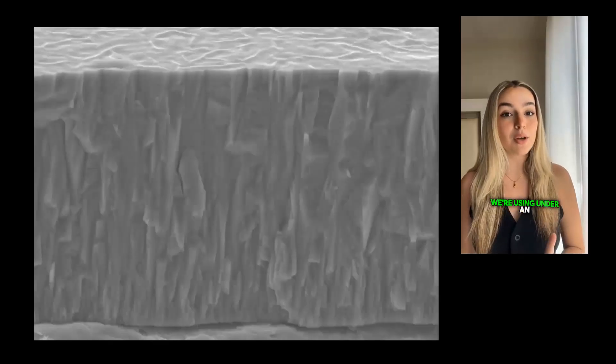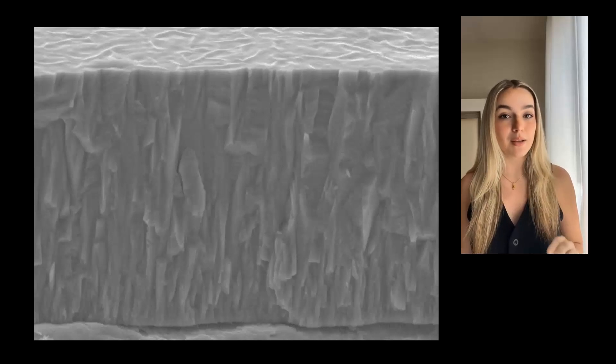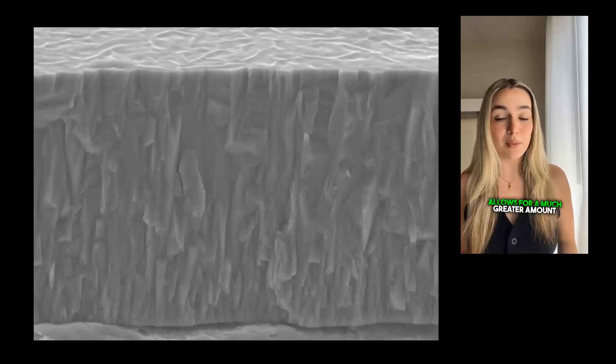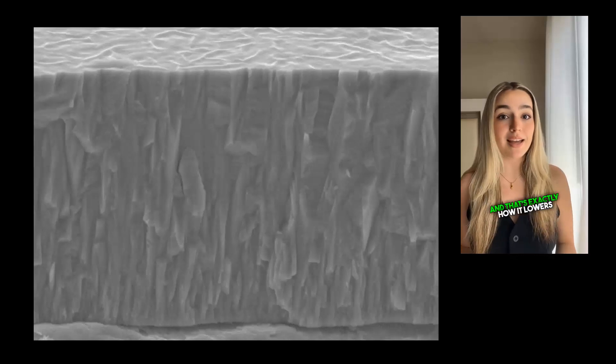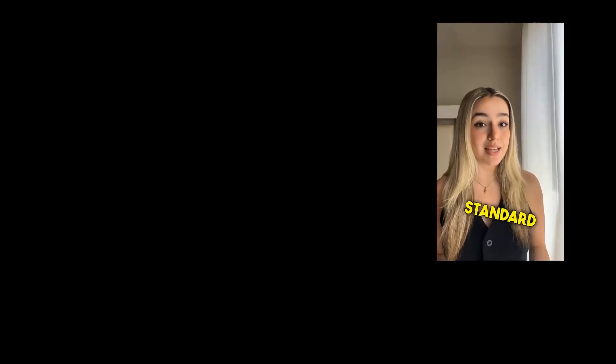This is the surface of the material we're using under an electron microscope. This ultra-smooth surface allows for a much greater amount of contact, and that's exactly how it lowers contact resistance. Is it really better than a standard copper crimp lug though? Time to find out.